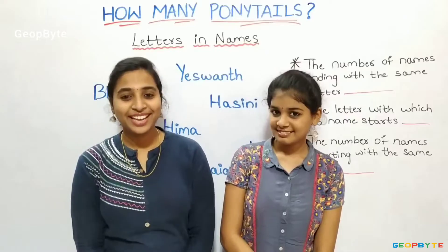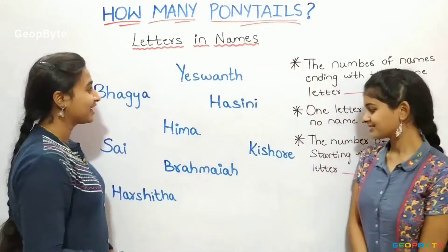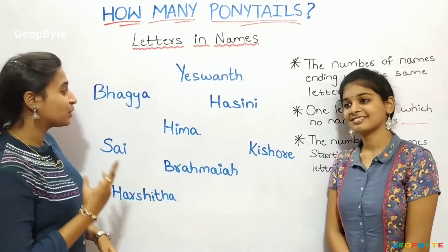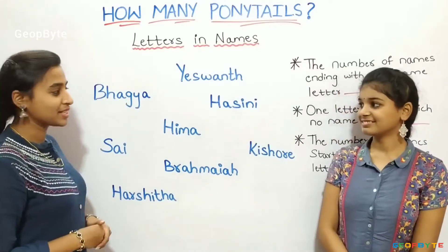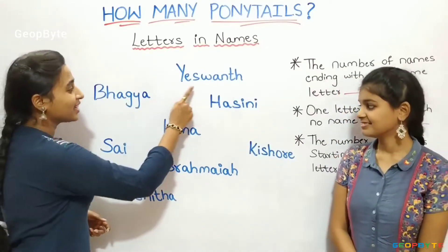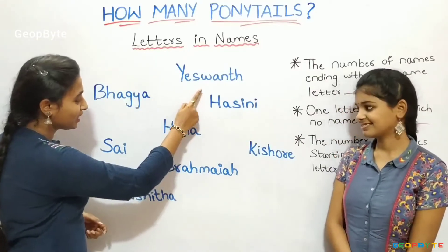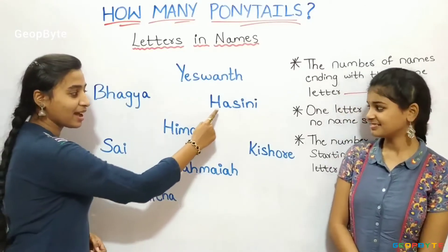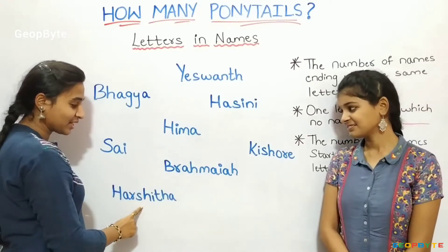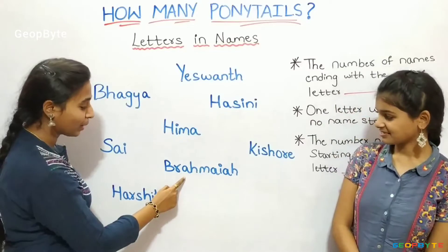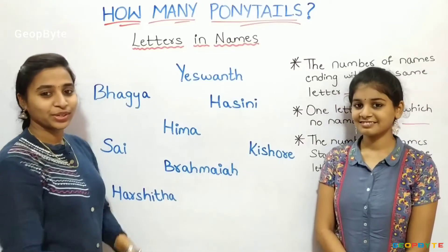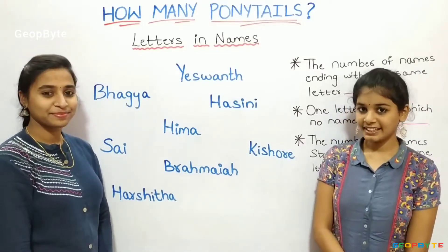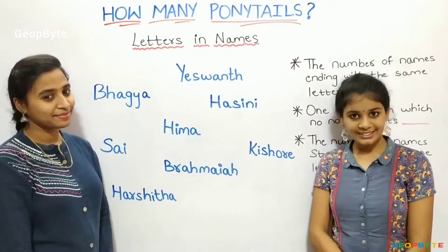Hey kids, see here. I have a few names: Bagya, Yeshvant, Sai, Himar, Hasini, Harshita, Brahmaya and Kishore. Now let us see some questions.